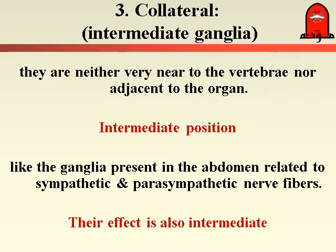The third type of ganglia is the collateral ganglia, present between the paravertebral and terminal ganglia — they are intermediate in position. So they have neither short nor long preganglionic fibers, and neither short nor long postganglionic fibers. Their function is also intermediate — neither diffuse to many organs nor localized to one single organ. All their activity and structure is intermediate between the paravertebral and the terminal ganglia.